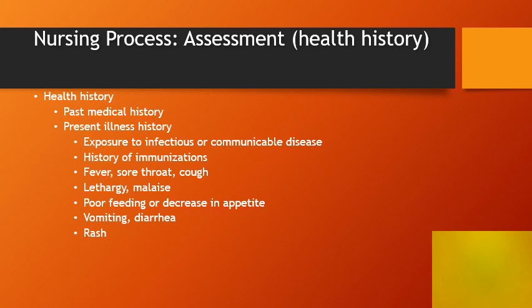For the nursing process, we start with assessment. For a child with an infectious or communicable disorder, we begin with health history. It is really important to get the past medical history — this might include the pregnancy history of the mom, family history, and the history of the present illness. Past medical history may be significant if the child lacks immunizations, was born prematurely, or if the mother had any infections during pregnancy.